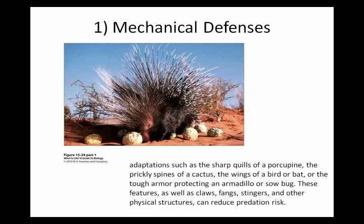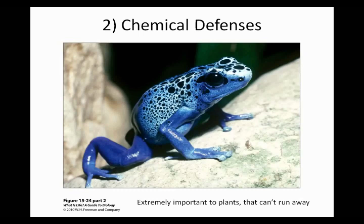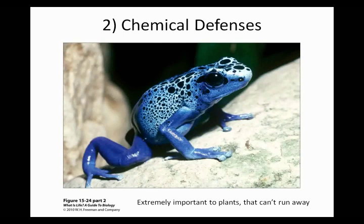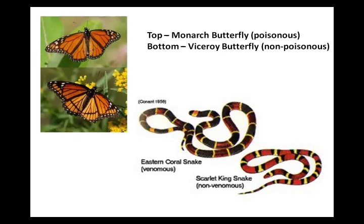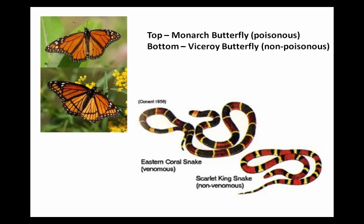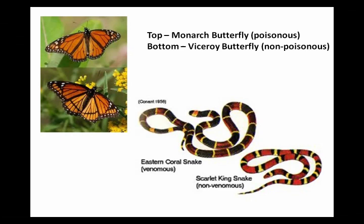Chemical defenses have evolved especially in plants because plants are not capable of running away, so they have bright colorations that show they're something that shouldn't be eaten because they're poisonous. Here we have a monarch butterfly on the top, and in the bottom picture we have a viceroy butterfly — a butterfly that has adapted to look just like a monarch butterfly, but the viceroy butterfly isn't poisonous. If you were a bird swooping in to eat a butterfly, you wouldn't take the time to figure out whether it's a monarch or a viceroy — you'd just be better off not eating it.